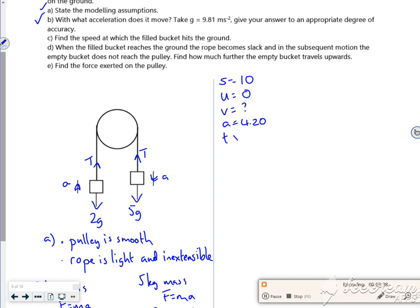And I'm not fussed about the time. So anything without t. So it's got to be v squared equals u squared plus 2as.